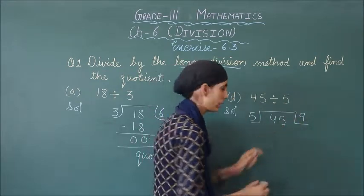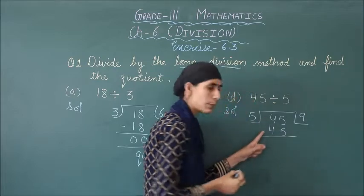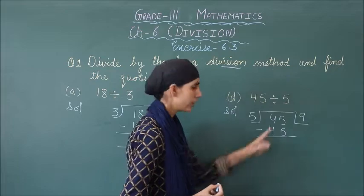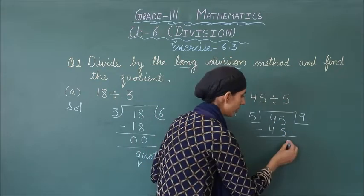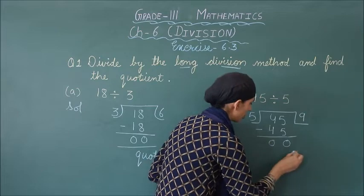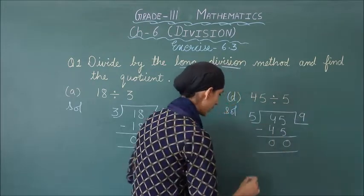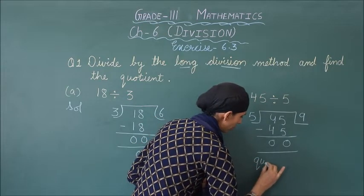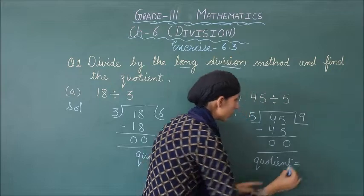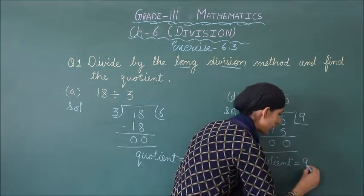5 nines are 45. Then hamara next step: minus. Yahan par minus ka symbol put karo. 5 minus 5 is 0, 4 minus 4 is 0. So hamare paas answer mein 0 bach gaya. Ab hume kya likhna tha? Quotient. Quotient equals to — kya tha aapka quotient? 9 tha na. So aap 9 yahan write down karoge.